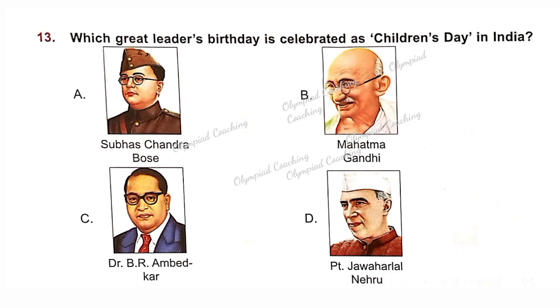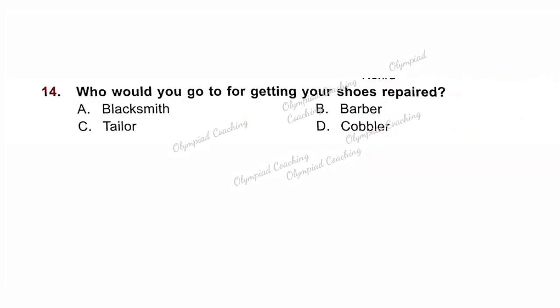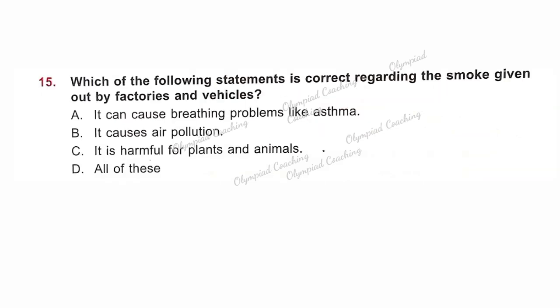Question No. 13: Which leader's birthday is celebrated as Children's Day in India? Question No. 14: Who do you go to for getting your shoes repaired? Option D is correct — a cobbler repairs shoes. Question No. 15: Which of the following statements is correct regarding the smoke given out by factories and vehicles? Option A — it can cause breathing problems like asthma. Option B — it causes air pollution. Option C — it is harmful for plants and animals. Option D — all of these. The correct answer is all of these.